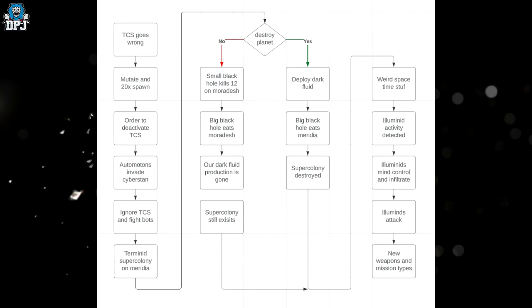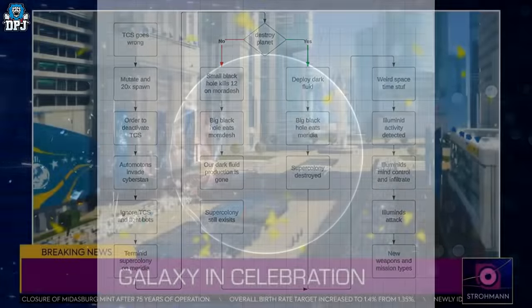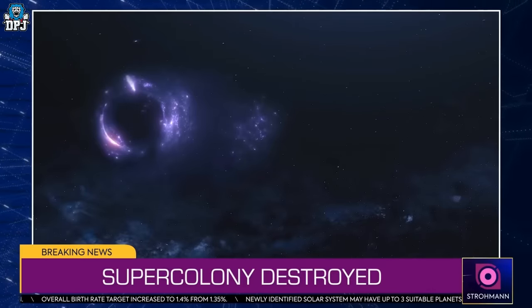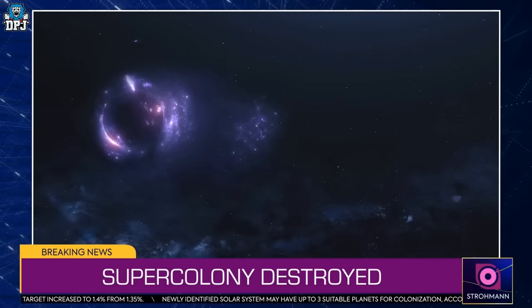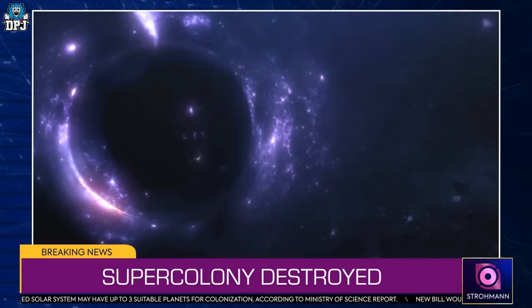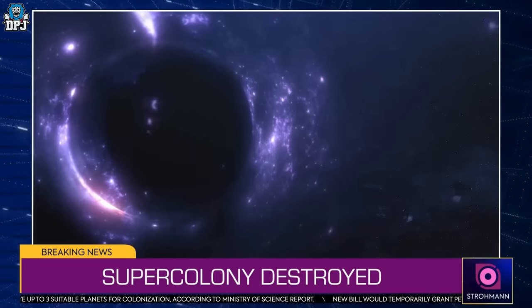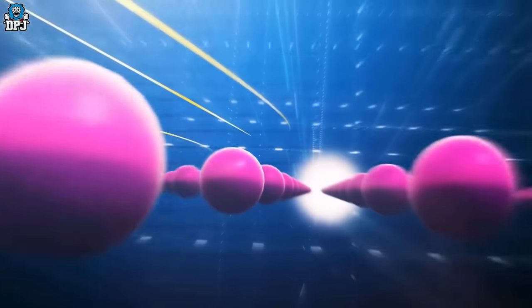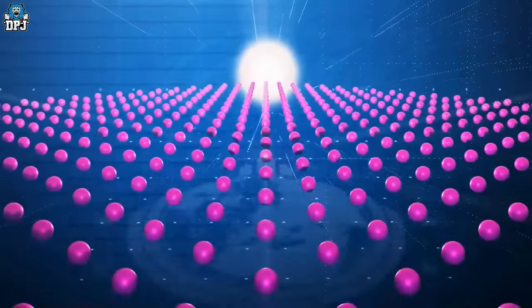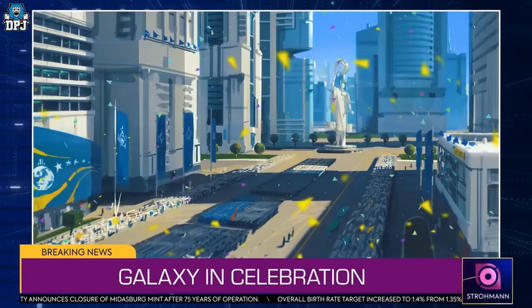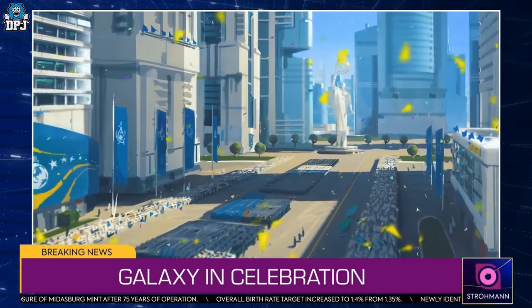Going back to the timeline lore, no matter what path we take in regards to the destruction of Meridia or Moradesh, whichever option we go on, it all seems to lead in the same direction where it states weird space-time stuff. If we go back to the video where we win, when we take out this super colony, you hear Coretta Kelly go on to talk about concerns of unforeseeable impacts from the use of dark fluid have proved largely unfounded with only minor space-time distortions observed in the area surrounding the singularity. So it does seem as though if we are successful with our uses of that dark fluid and we take out the super colony on Meridia, it seems our next in line will be the Illuminate, which to a lot of us who have followed the Illuminate within Helldivers 2 and all the datamines and leaks over the past couple of months, it's been a long time coming.